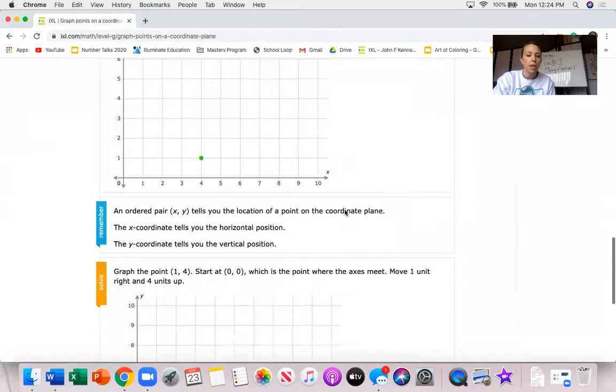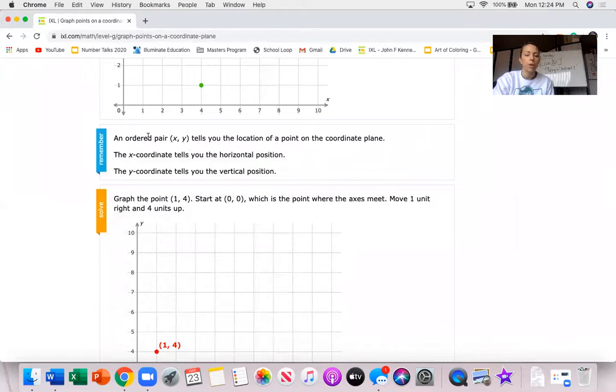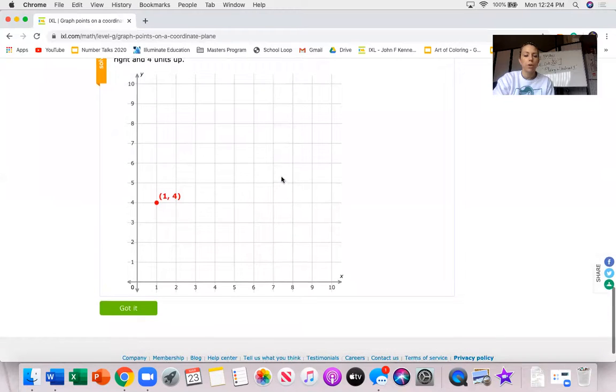It says what I answered and then look, remember an ordered pair XY tells you the location of a point. X tells you the horizontal position. Y tells you the vertical and then I look at this and I'm like oh I see what I did wrong. I did the vertical position first followed by the horizontal.